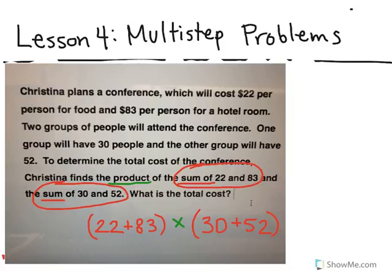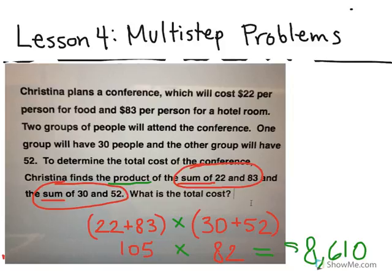Now we find the sum of each. The sum of twenty-two and eighty-three is one hundred five. The sum of thirty and fifty-two is eighty-two. We multiply those two values, and the product is eight thousand six hundred ten. Since this is dealing with money, we put the dollar sign right there — eight thousand six hundred ten dollars.